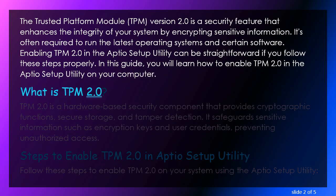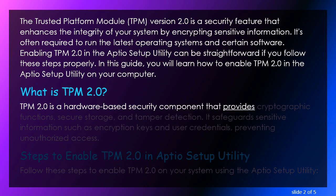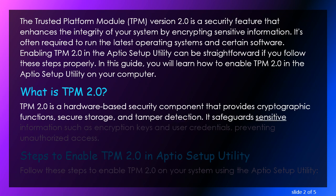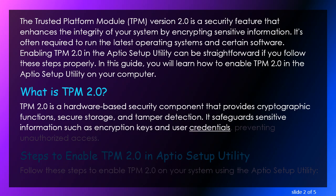What is TPM 2.0? TPM 2.0 is a hardware-based security component that provides cryptographic functions, secure storage, and tamper detection. It safeguards sensitive information such as encryption keys and user credentials, preventing unauthorized access.